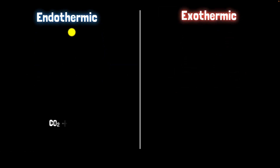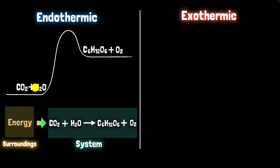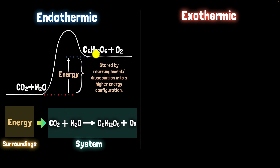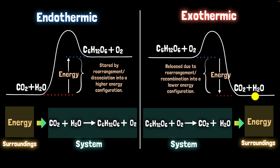A quick recap: in endothermic reactions, energy is absorbed from the surroundings into the system. Certain arrangements of atoms have higher chemical energy than others, so energy is stored when you go from one arrangement to another. In exothermic reactions, that stored energy is released from the reaction system into the surroundings.